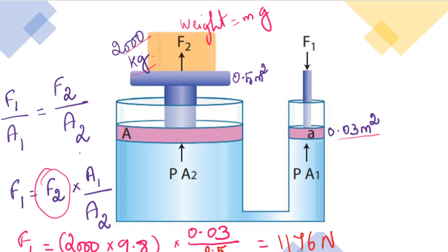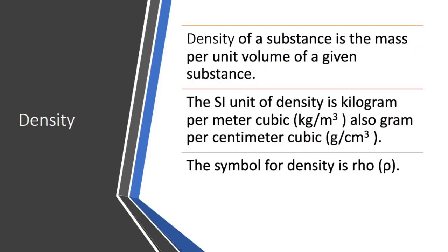Now let us discuss density. The definition of density is mass per unit volume of a given substance, that is mass divided by volume. The unit of mass is kilogram and the unit of volume is meter cube (length × width × height). So the unit of density is kilogram per meter cube.